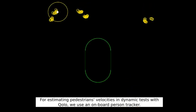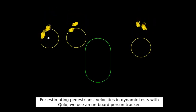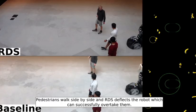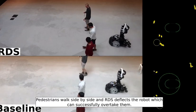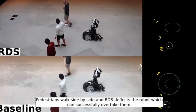For estimating pedestrians' velocities in dynamic tests with colo, we use an on-board person tracker. Pedestrians walk side by side and RDS deflects the robot, which can successfully overtake them.